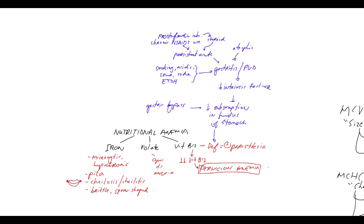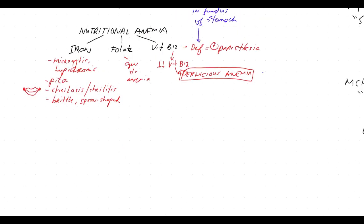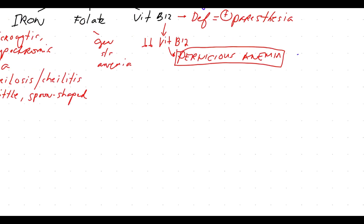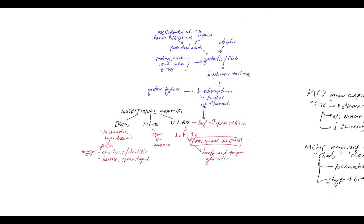How do we know someone has vitamin B12 deficiency? We look at signs and symptoms. Paresthesia is a sign of vitamin B12 deficiency — it doesn't necessarily mean there's anemia yet, but if there is anemia, there will definitely be paresthesia, as it comes even before pernicious anemia. Other words to associate with this anemia are paresthesia and a beefy red tongue — that's because of glossitis that happens with lack of vitamin B12. So glossitis, paresthesia, and beefy red tongue are the hallmarks for pernicious anemia.